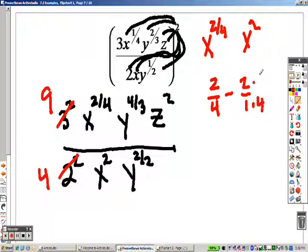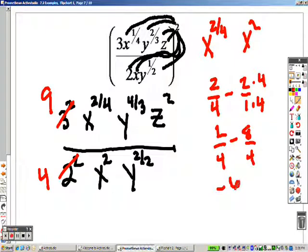So I'm saying 2 over 1, so to find the same, I need to multiply both the top and the bottom by 4, so it's 2 fourths minus 8 fourths, which is negative 6 fourths.